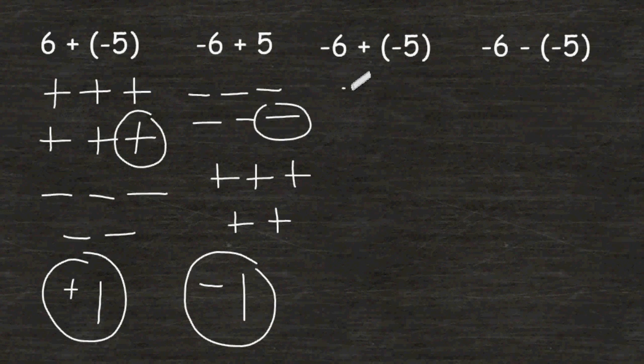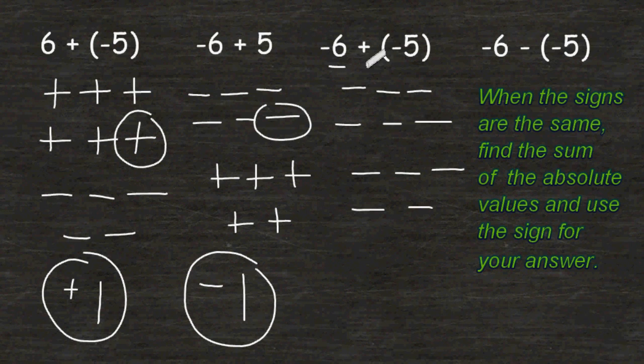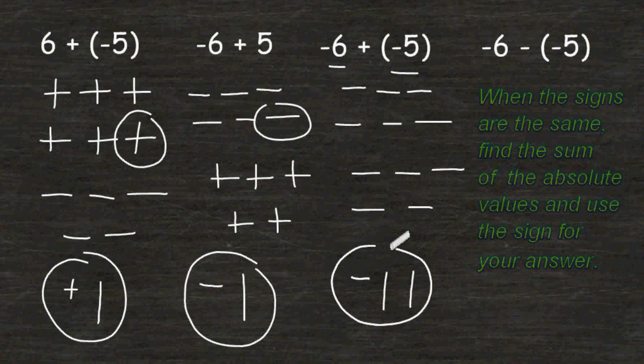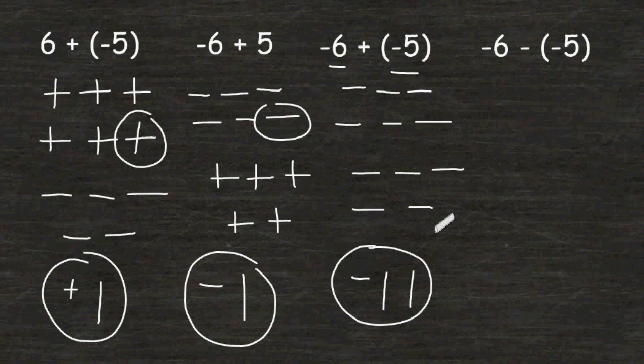And for the third example, we have 6 negatives added to 5 more negatives. Now when your signs are the same, the rule is find the sum of the absolute values. The sum of 6 and 5 is equal to 11. And when the signs are the same, you must use that same sign in your answer. So if you were adding a positive to a positive, like regular addition, your answer would of course be positive. And a negative plus a negative will always give you a negative answer.